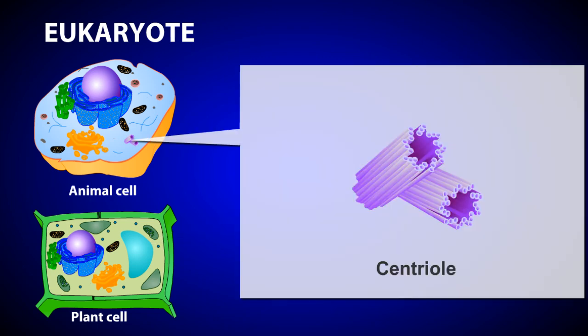Centrioles are organelles found mainly in animal cells. They are composed of microtubules and occur in pairs. Centrioles function in the reorganization of microtubules during the process of cell division.